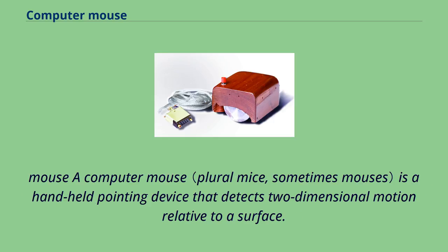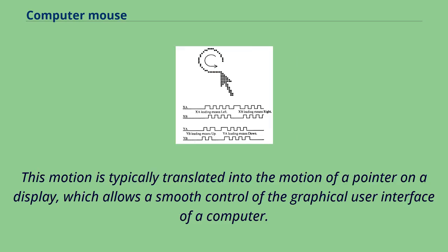A computer mouse is a handheld pointing device that detects two-dimensional motion relative to a surface. This motion is typically translated into the motion of a pointer on a display, which allows smooth control of the graphical user interface of a computer.